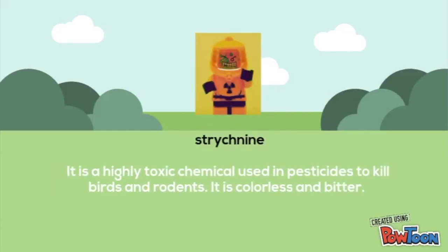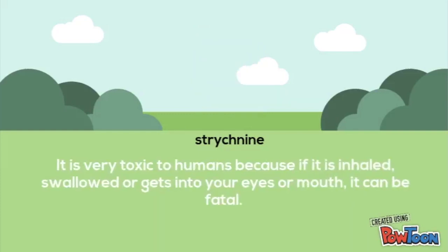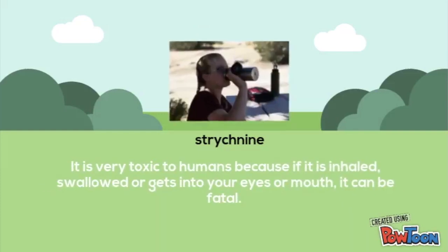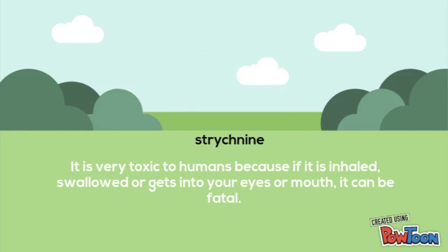So strychnine. It is a highly toxic chemical used in pesticides to kill birds and rodents. It is colorless and bitter. It is very toxic to humans because if it is inhaled, swallowed, or gets in your eyes or mouth, it can be fatal.